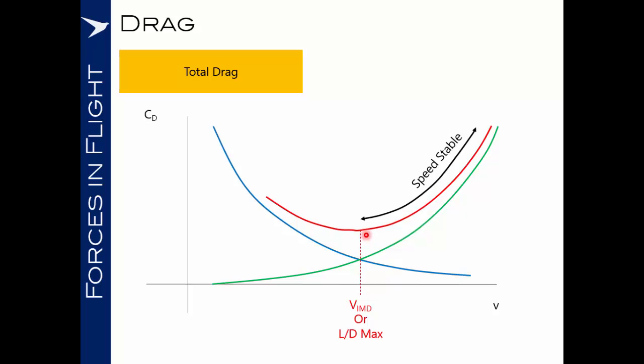However if we are flying slower than the minimum drag speed on the left hand side of this curve then you can see that if we were to decrease our speed the drag will go up. The effect that this has is that with an increase in drag we will tend to slow down further. As we slow down further so the drag will go up and so we will tend to slow down further. The speed will become divergent or we can say we will be speed unstable.